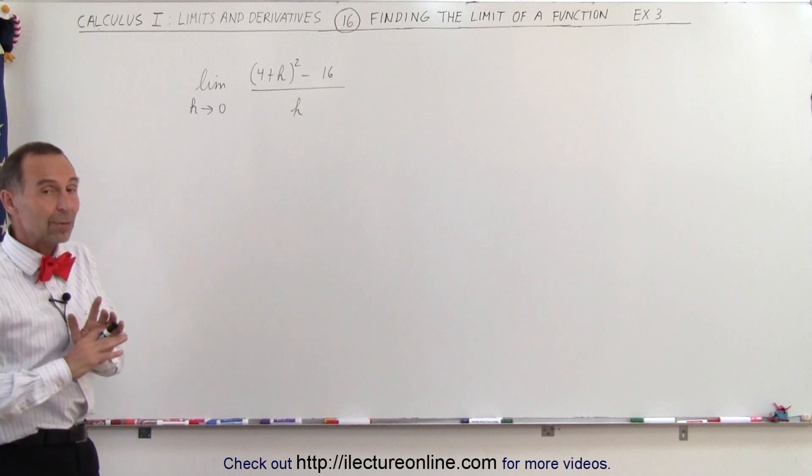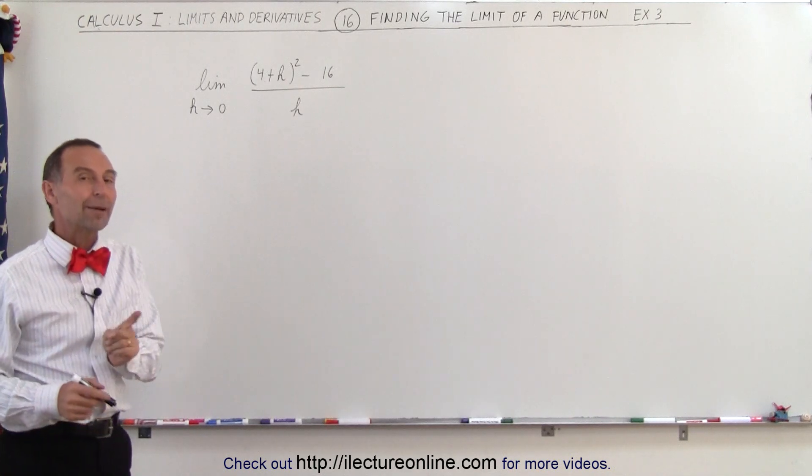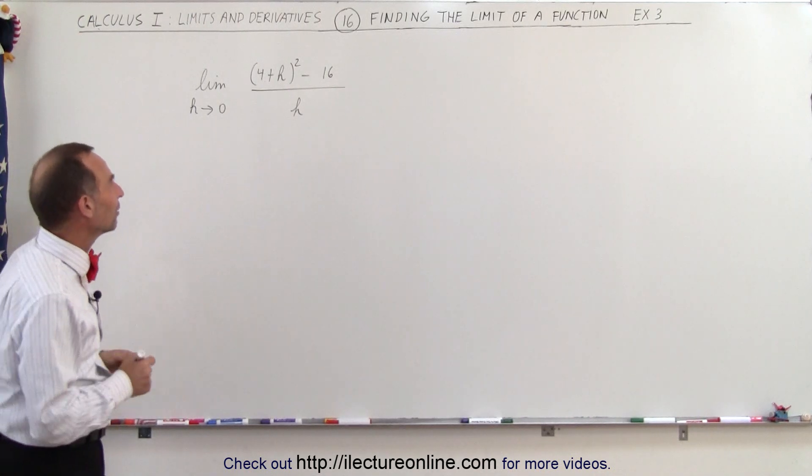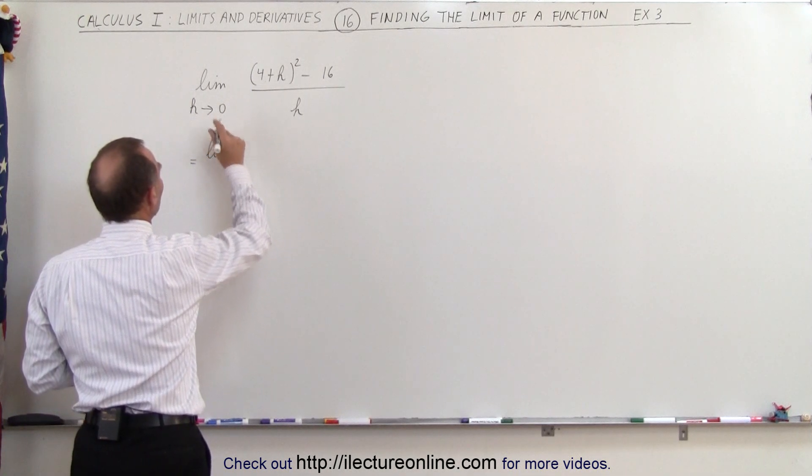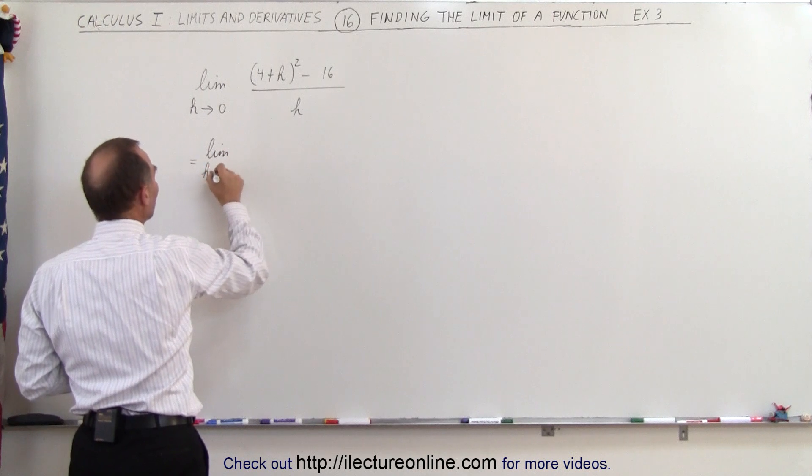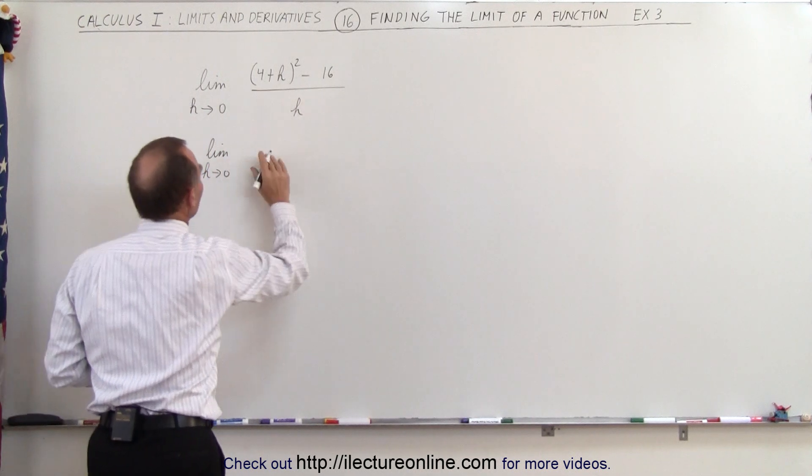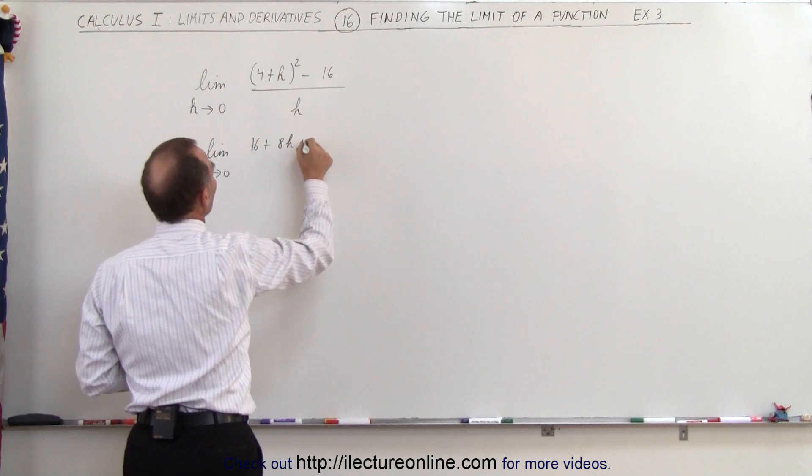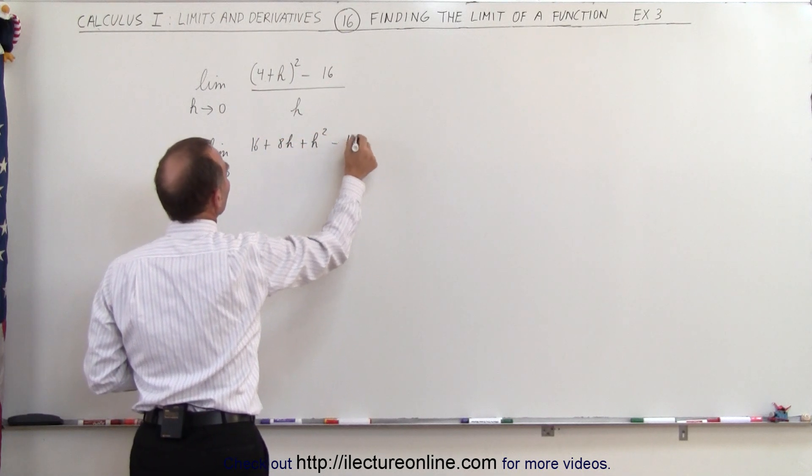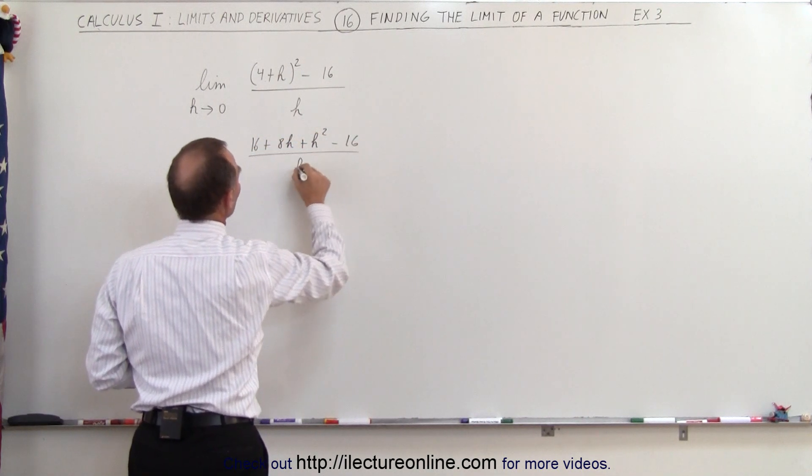However, if we work things out and simplify whatever we can, we might be able to substitute 0 in for h. So let's see that this is equal to the limit, and of course you have to keep writing this as h approaches 0. We're going to multiply this out, so this is going to be 16 plus 8h plus h squared minus 16 divided by h.